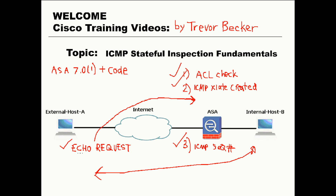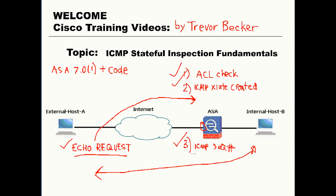As an inbound echo request is sent to the firewall, the firewall is first going to look at the access list applied to the outside interface and make sure that ICMP traffic is allowed through that interface. If it is, it's then going to create a temporary ICMP xlate. The ASA is then going to create a one-response temporary connection, and the echo reply will be sent using that one-response connection only if the ICMP sequence number matches the echo request.